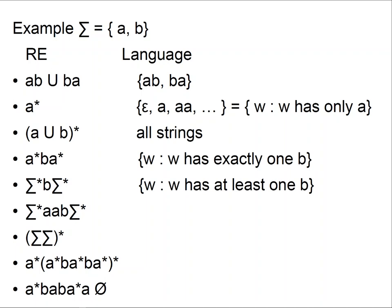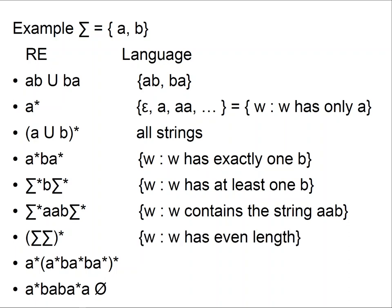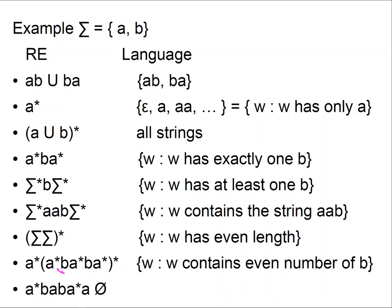sigma*b sigma* gives strings with at least one b. sigma*aab sigma* gives strings that contain the string 'aab' somewhere. sigma sigma* gives strings of even length. The next one is a little more complicated: it describes strings w that contain an even number of b's. If you put a b you have to put another b, then you take the star of that set — and the a's are free.